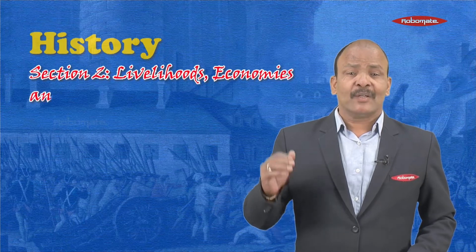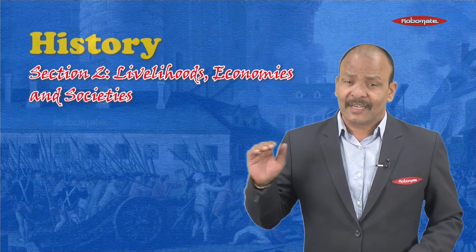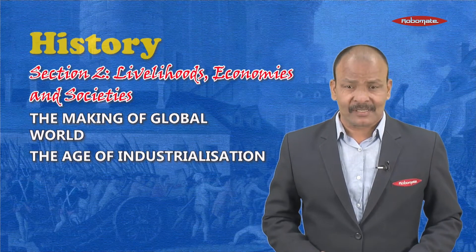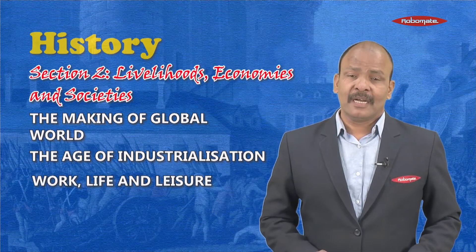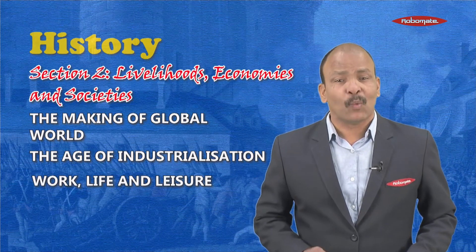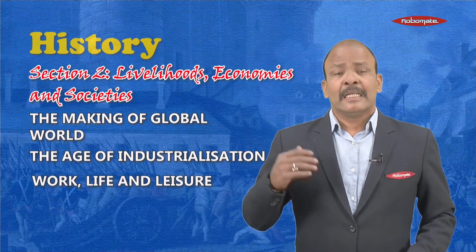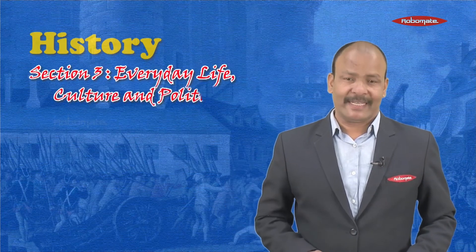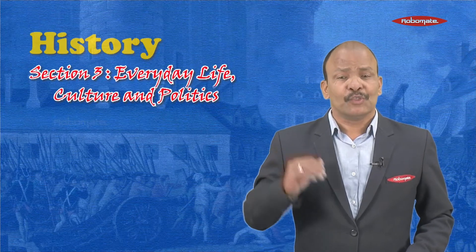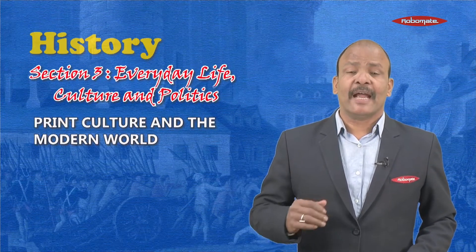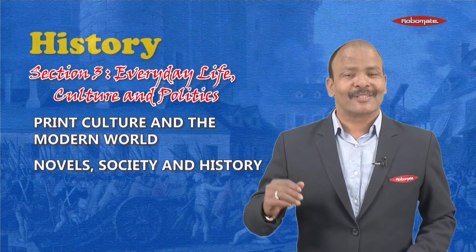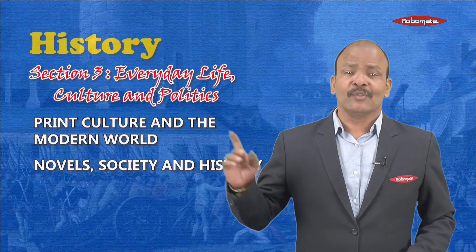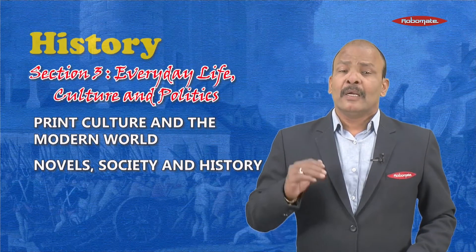Talking about section two, you have Livelihoods, Economies and Societies. In this you have three chapters: The Making of a Global World, The Age of Industrialization, and Work, Life and Leisure. Out of this you need to select one. Talking about section three, we have Everyday Life, Culture and Politics. In this again you have two chapters: Print Culture and a Modern World, and Novels, Society and History. Out of this you need to select one.